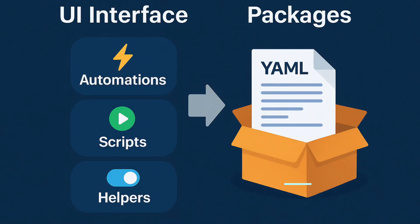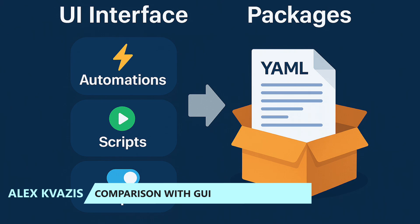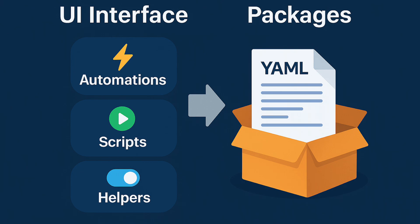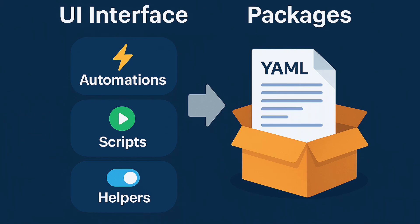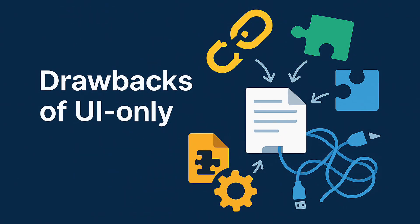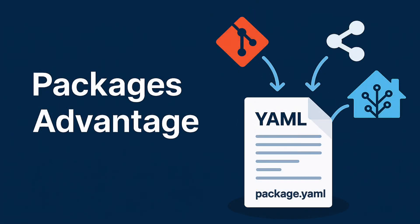Now let's compare the approach via packages with the usual creation of objects in the Home Assistant interface. When we work through the UI, everything is fragmented: automations live in the Automation section, scripts in Scripts, helper entities like input_boolean or input_select are located in Helpers — and all this is not connected into a single picture. If the project is complex, you have to remember which elements belong to which task. The drawbacks are obvious: it's hard to tie the logic into a single whole, and it's difficult to share ready-made solutions — at most you can export individual automations.